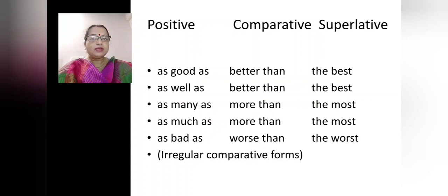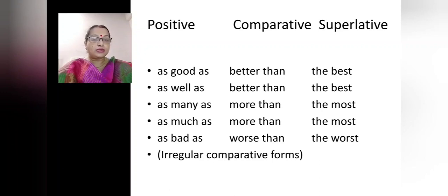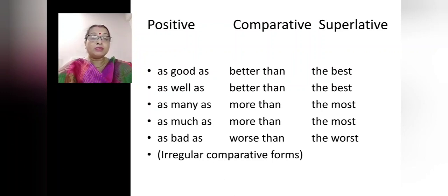There are some adjectives that do not form the comparative and superlative from their positives. They have irregular degrees of comparison. As good as — comparative: better than; superlative: the best. As well as — comparative: better than; superlative: the best. As many as — comparative: more than; superlative: the most. As much as — comparative: more than; superlative: the most. As bad as — comparative: worse than; superlative: the worst.